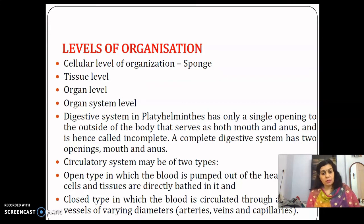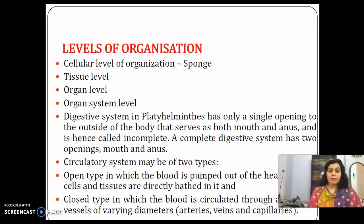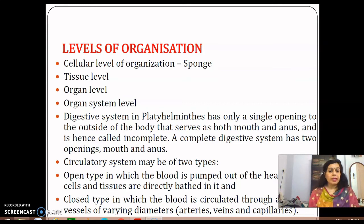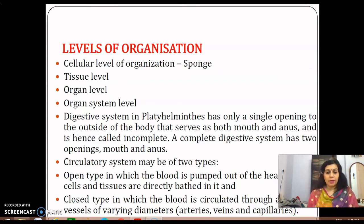The digestive system is also a criterion for division of animals. Some animals have a complete digestive system and others have an incomplete digestive system. In an incomplete digestive system, there is only a single opening to the outside of the body, meaning the same opening serves as both mouth and anus.